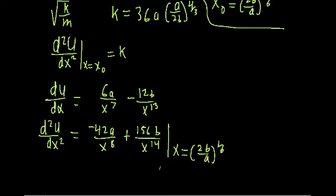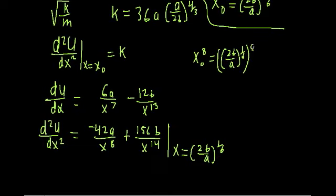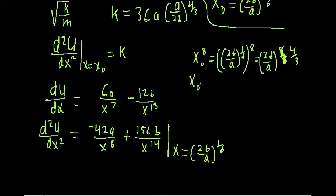To keep things neat, let's compute x₀^8 and x₀^14 on the side. x₀^8 equals (2B/A)^(1/6) raised to the 8th, which is (2B/A)^(8/6) = (2B/A)^(4/3). Similarly, x₀^14 equals (2B/A)^(14/6) = (2B/A)^(7/3).